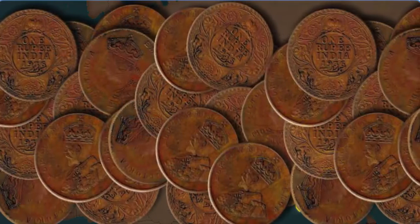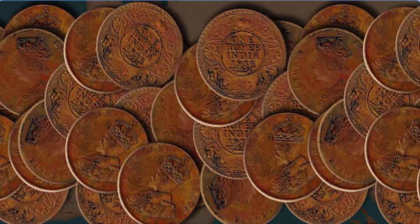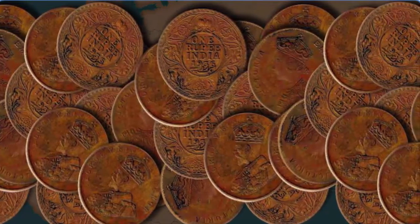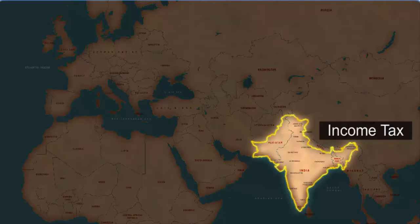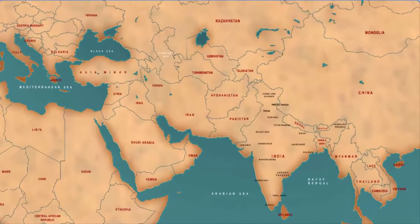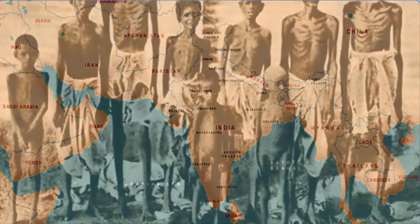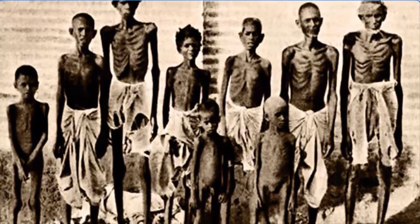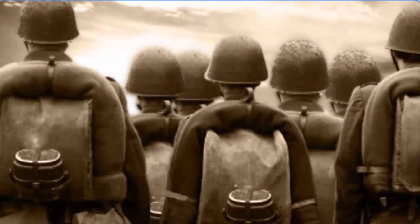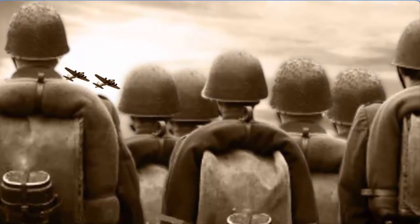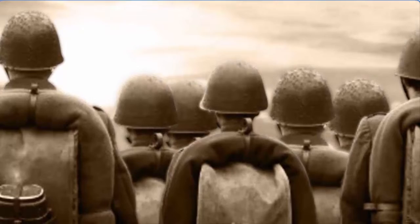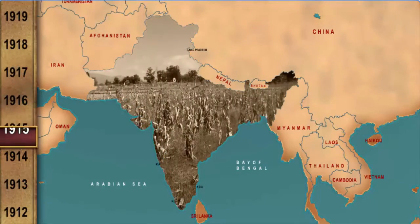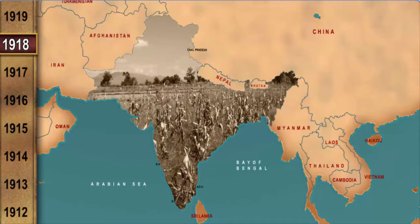The rise in taxes had an adverse effect on the common people who were forced to live a life of extreme hardship. Another factor which infuriated common people was the forced recruitment of rural people into the army to fight in the First World War. The situation worsened during 1918 when India was hit by crop failure and shortage of food grains, further followed by famines and outbreak of influenza. This harsh social and political situation set the stage for the beginning of the nationalist struggle in India.